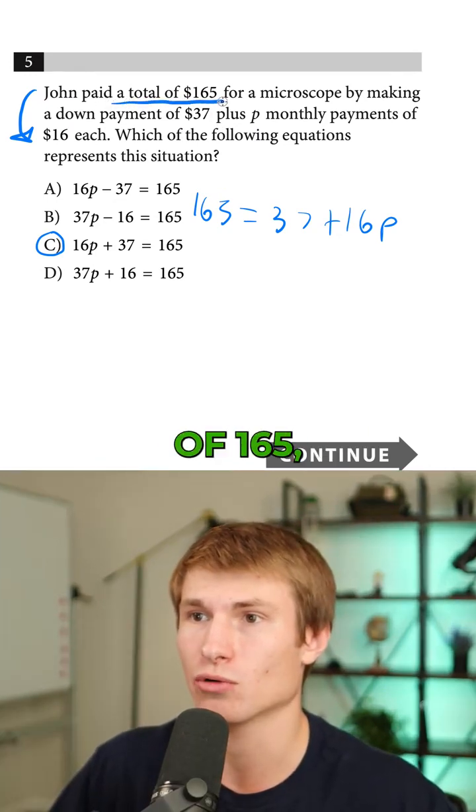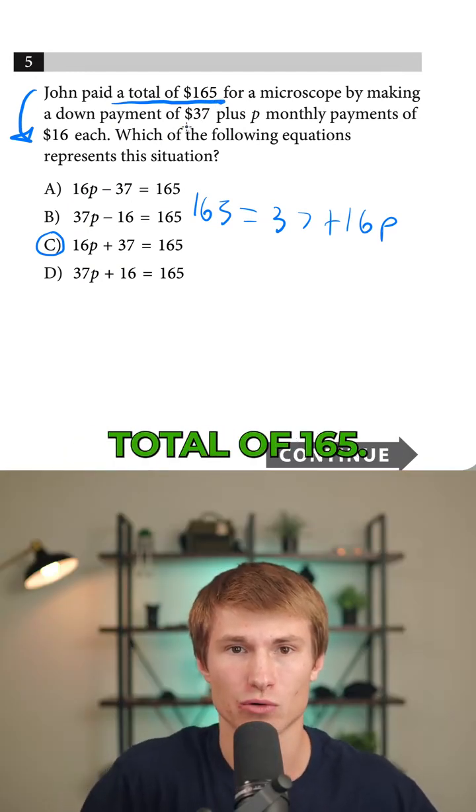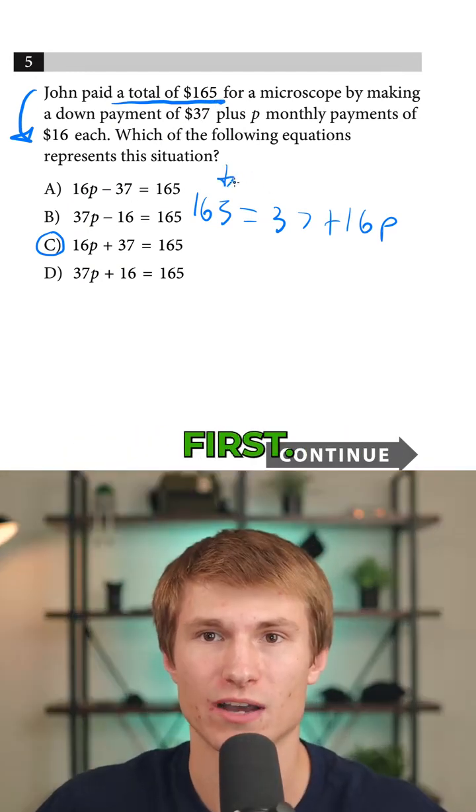So as you saw, when I saw that I had a total of $165, I knew I was probably going to sum up something else to get to that total of $165. So I wrote down $165 first.